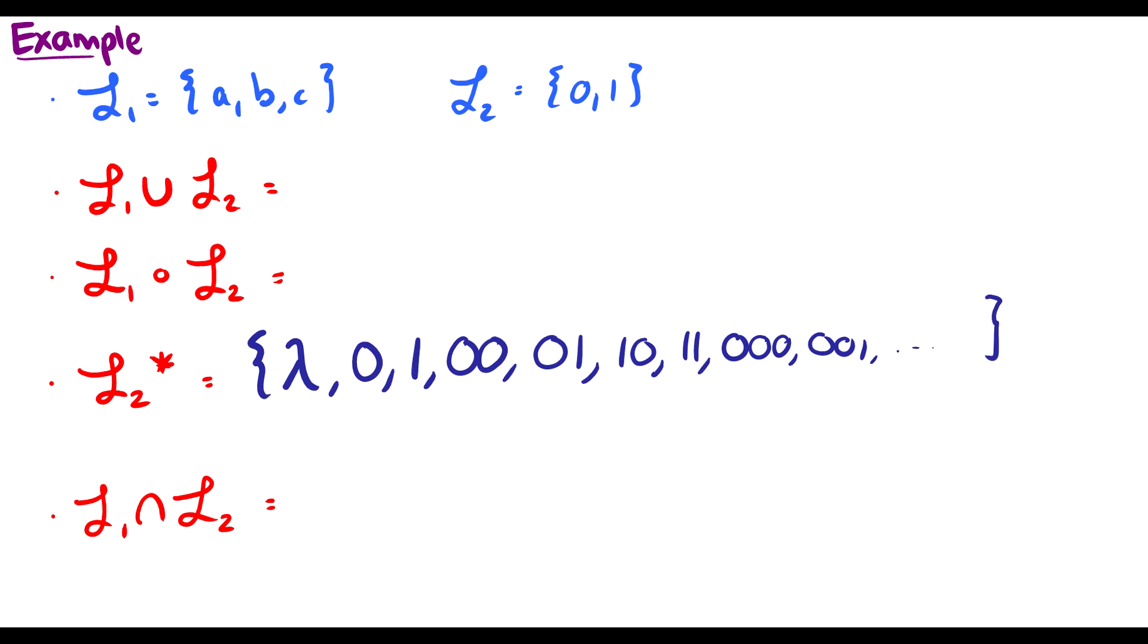Let's do the union and the intersection. So the union, of course, it's going to be in language one or language two. So if language one is ABC, language two is zero, one, then L1 union L2 is going to be ABC, zero, one. L1 intersection L2 is going to be the empty set, since they share no common strings.